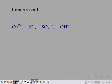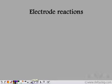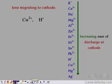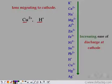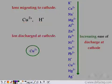Let's start with the cations first. We have Cu²⁺ and H⁺. Only one cation can be discharged at the cathode, so we look at the relative positions in the electrochemical series. We see that the copper ion lies below hydrogen ions in the electrochemical series, so copper ions get discharged at the cathode.